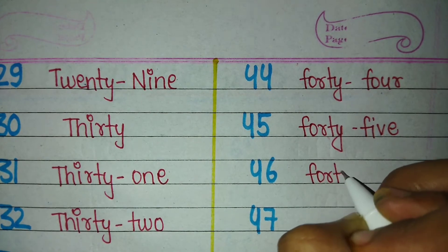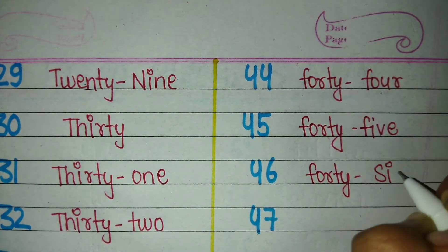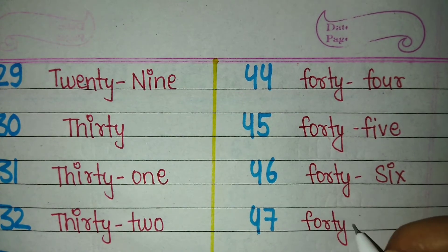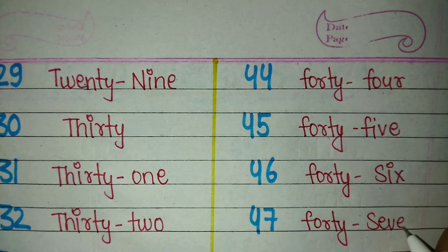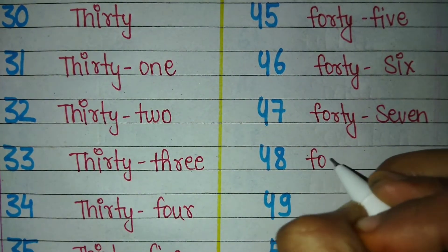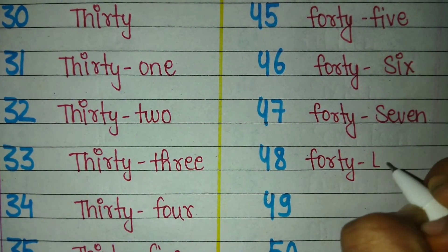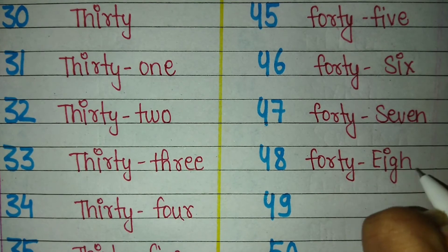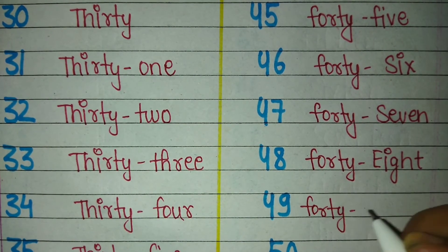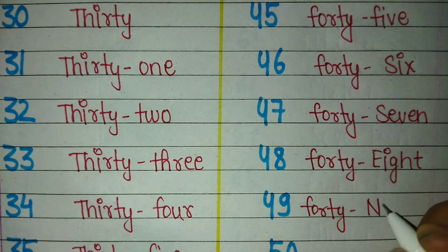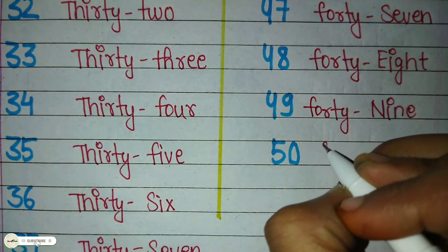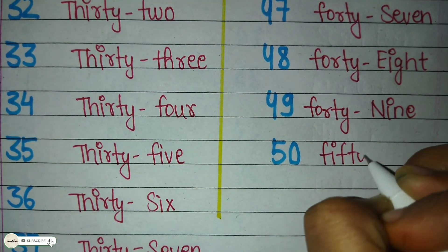Forty-six — F-O-R-T-Y — 40, S-I-X — 6 — 46. Forty-seven — F-O-R-T-Y — 40, S-E-V-E-N — 7 — 47. Forty-eight — F-O-R-T-Y — 40, E-I-G-H-T — 8 — 48. Forty-nine — F-O-R-T-Y — 40, N-I-N-E — 9 — 49. Fifty — F-I-F-T-Y — 50.